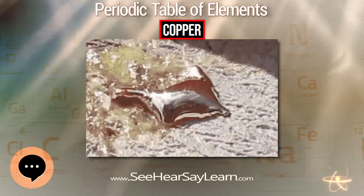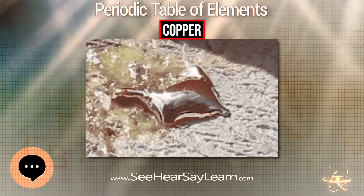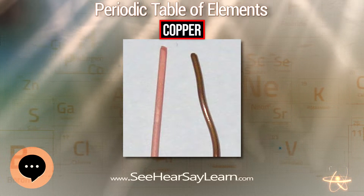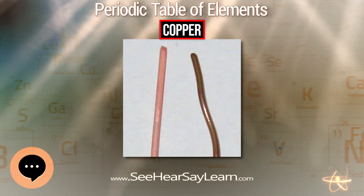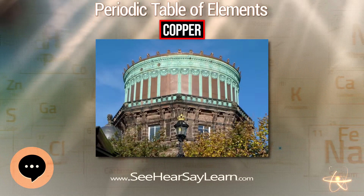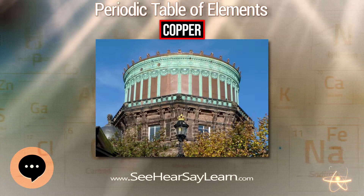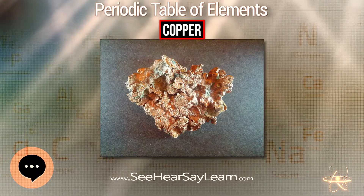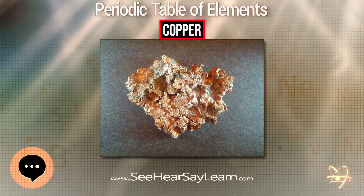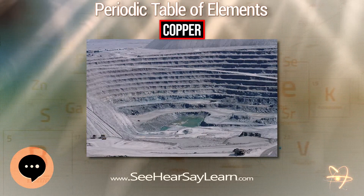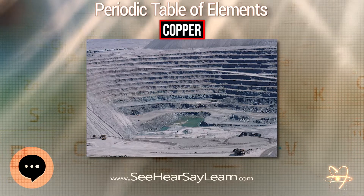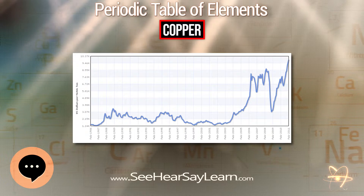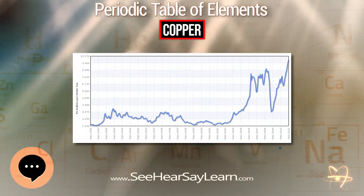More than half of all copper ever mined was extracted in the last 24 years. As with many natural resources, the total amount of copper on Earth is vast — around 10¹⁴ tons in the top kilometer of Earth's crust, which is about 5 million years' worth at the current rate of extraction. However, only a tiny fraction of these reserves is economically viable with present-day prices and technologies. Estimates of copper reserves available for mining vary from 25 to 60 years depending on core assumptions such as growth rate.